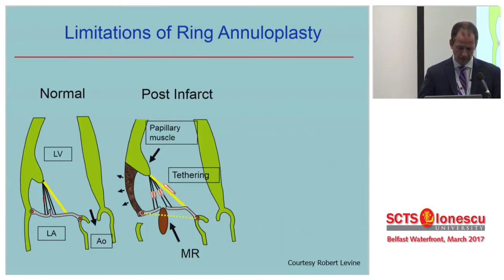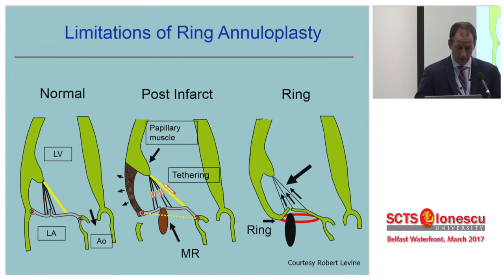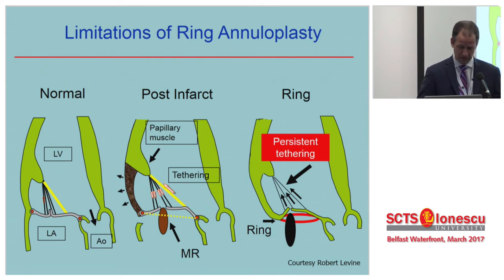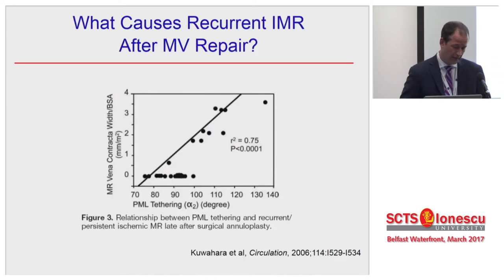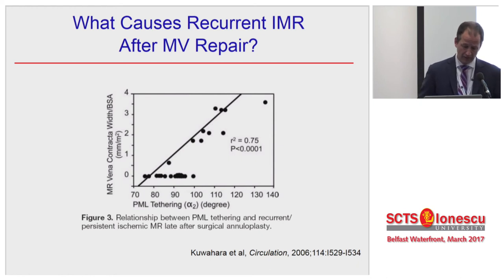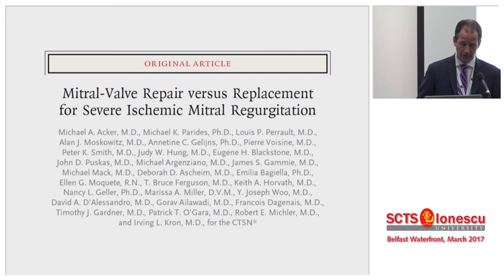Ring annuloplasty does not prevent increased tethering in all patients — persistent tethering occurs in a significant proportion. The Cleveland Clinic experience shows a recurrence rate of about 30%, but the CTSNET randomized trial shows it's actually much higher. A Japanese study demonstrated that the more severe the tethering of the posterior leaflet as measured by the posterior leaflet tethering angle, the more likely patients are to develop recurrent MR.